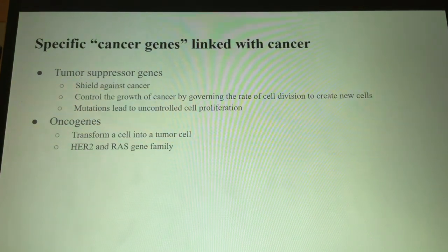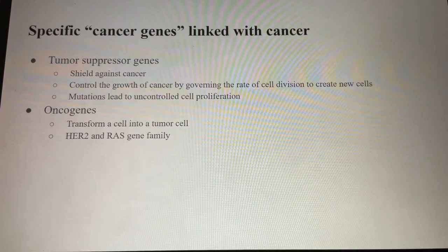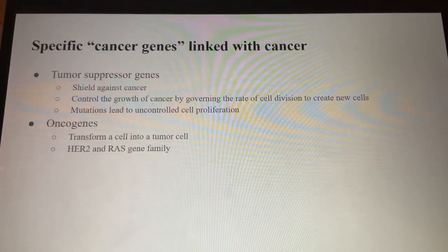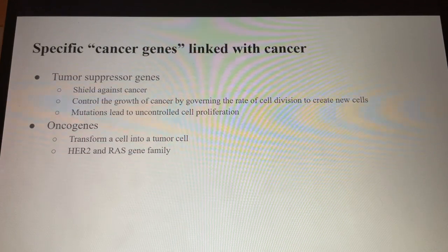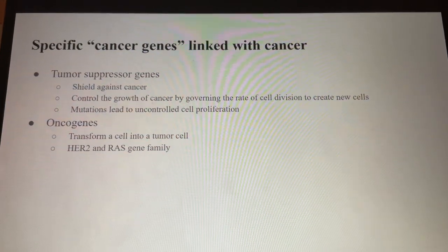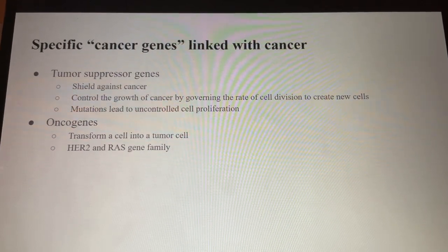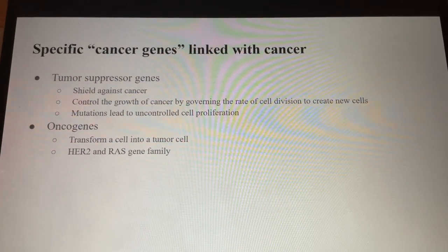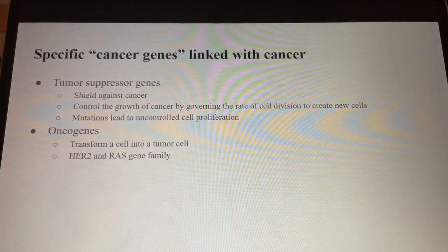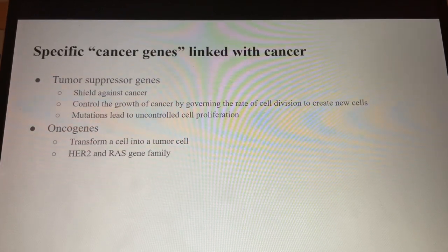Some genetic mutations are associated with specific genes. The first two introduced here are tumor suppressor genes, designated as tumor suppressors because they shield against cancer. Essentially, they control the growth of tumor cells by governing the rate of cell division to create new cells, rectifying the errors of DNA, and managing apoptosis, which is also known as programmed cell death. Mutations in tumor suppressor genes undermine the regulatory mechanism, leading to uncontrolled cell proliferation, ultimately culminating in the development of a tumor.